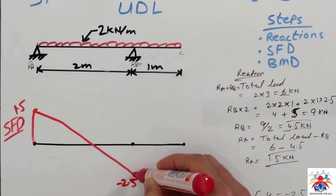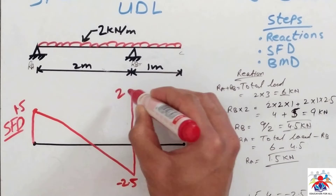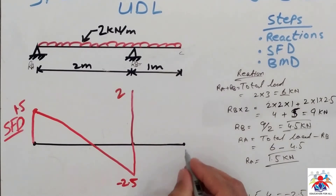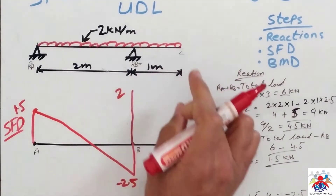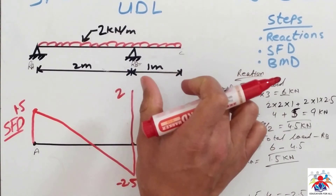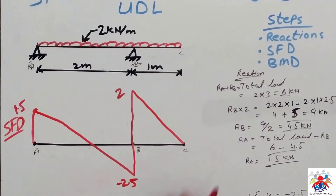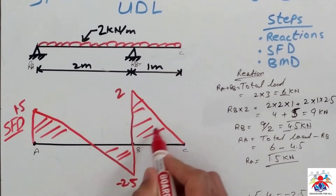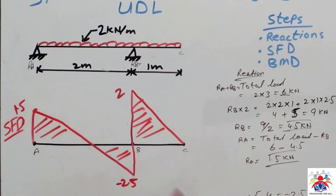Once we have minus 2.5 at point B, the reaction at B of 4.5 kN acts upward. So from minus 2.5 we go up: minus 2.5 plus 4.5 gives 2 kilonewtons. Then from B to C we have UDL of 2 kN/m over 1 meter, so we connect diagonally down to zero at point C. Because we have UDL, we draw diagonal lines rather than straight horizontal lines.